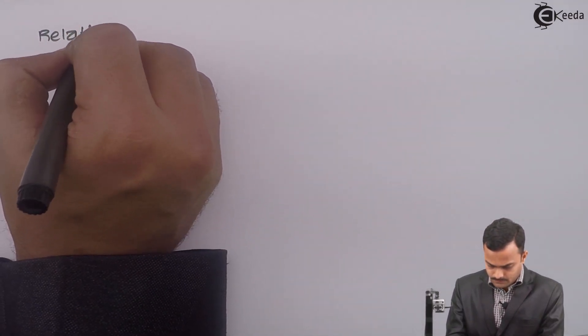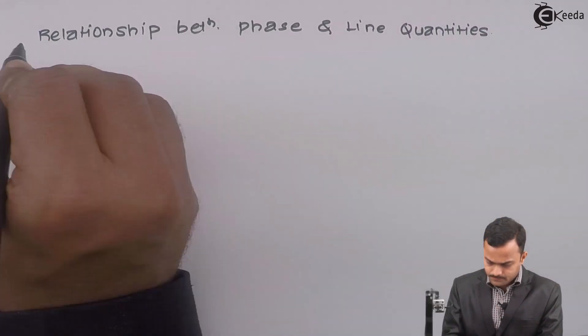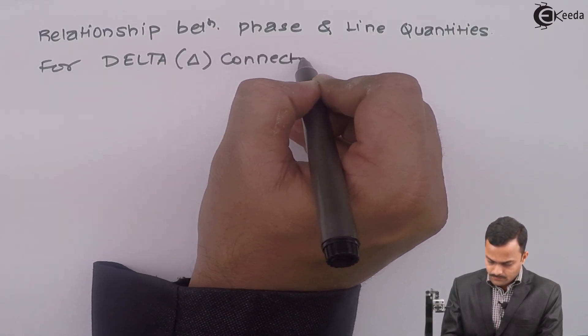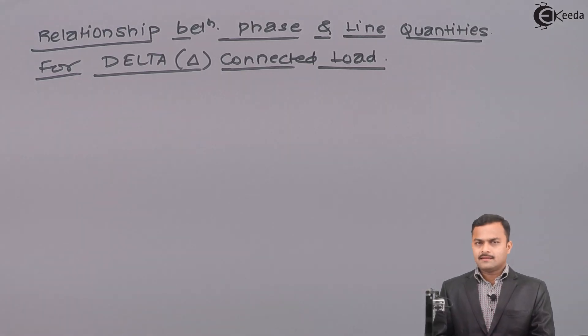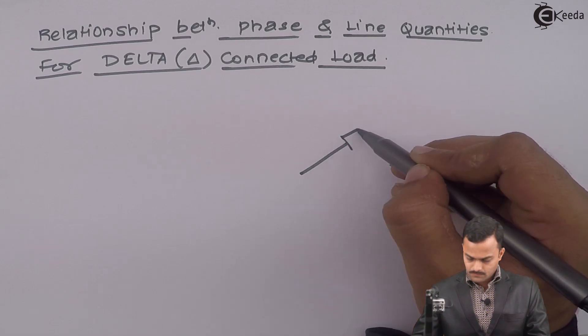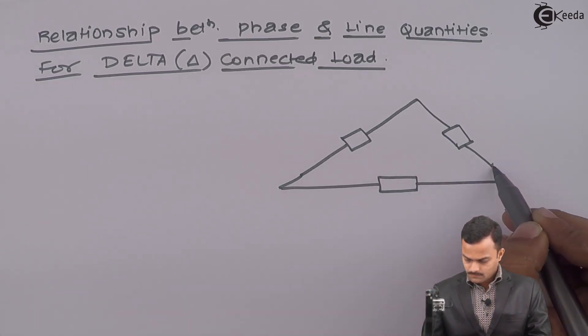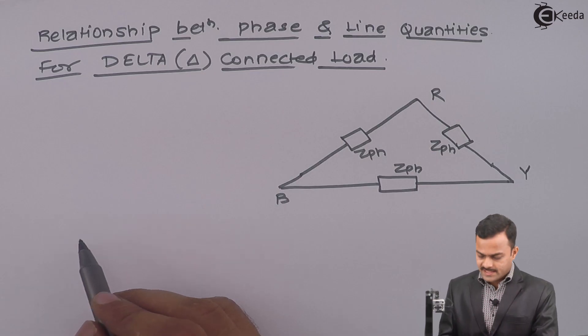Hello friends. In this video we are going to derive relationships between phase quantities and line quantities for a Delta connected load. Delta can be represented by a small triangle. I will consider a balanced Delta connected load, where Z_PH is the phase impedance. This load is driven by a three-phase supply.